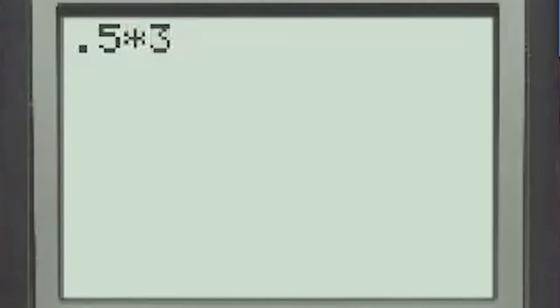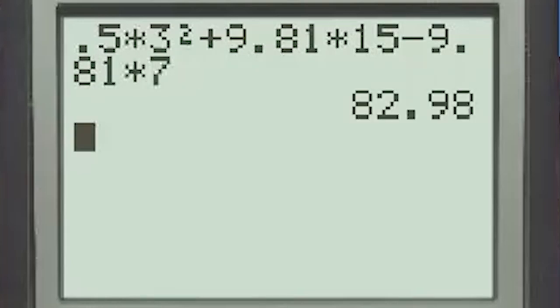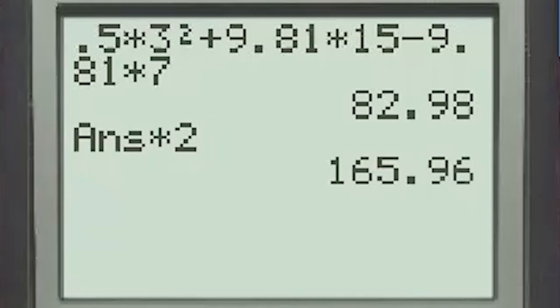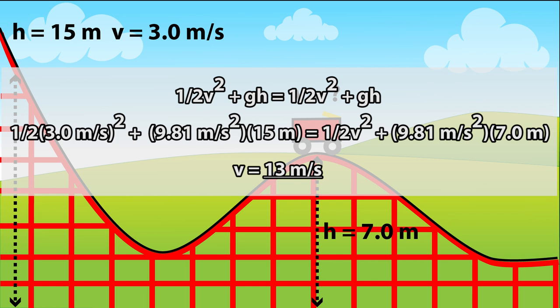Here's how I put it through my calculator. I enter in all of the left hand side first and then I subtract the gh term from the right hand side. That way I only have the one half v squared. Then I'm going to multiply both sides by two and I'm going to square root to get v by itself. That's going to give me a speed of 13 meters per second at the top of the second hill.